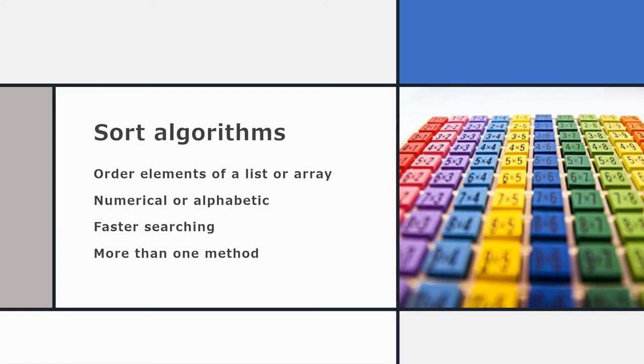All sort algorithms have the job of putting the elements of a list or array into order. If they're number values it will be into numerical order, and if they're string values then it will be into alphabetical order. The advantage of putting a list or array into order is that it is much faster to search for the item you need in a sorted list, because you can use the binary search algorithm which is massively faster than the linear search.